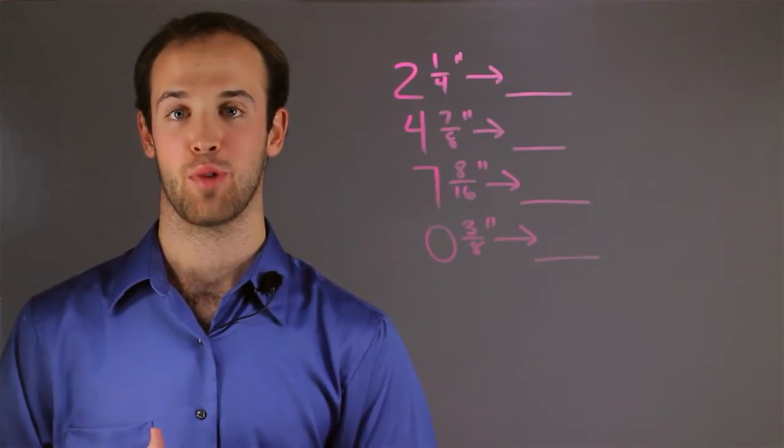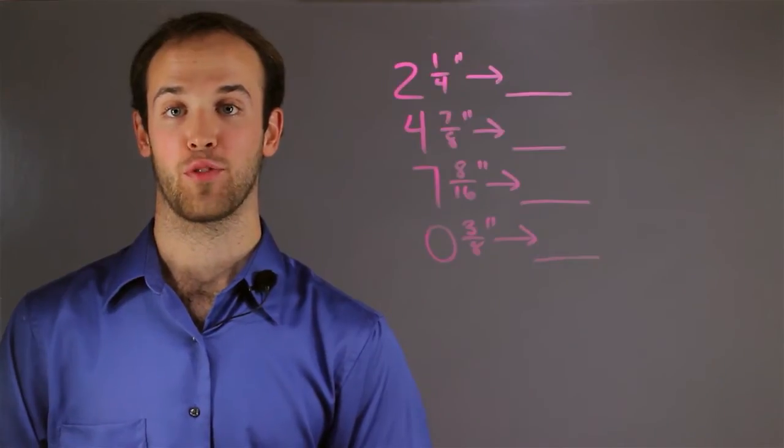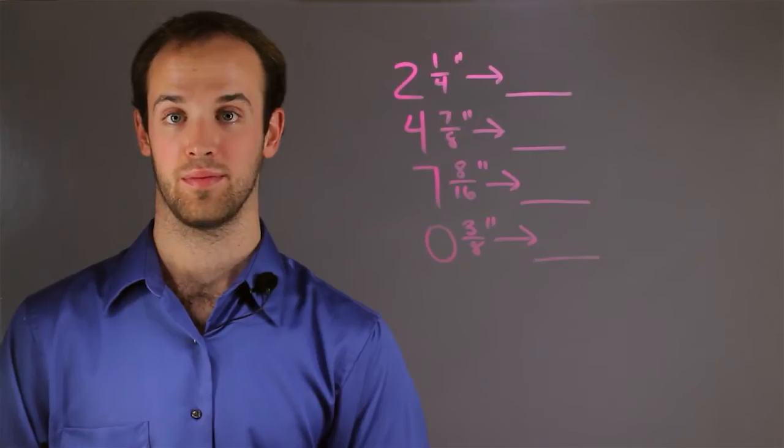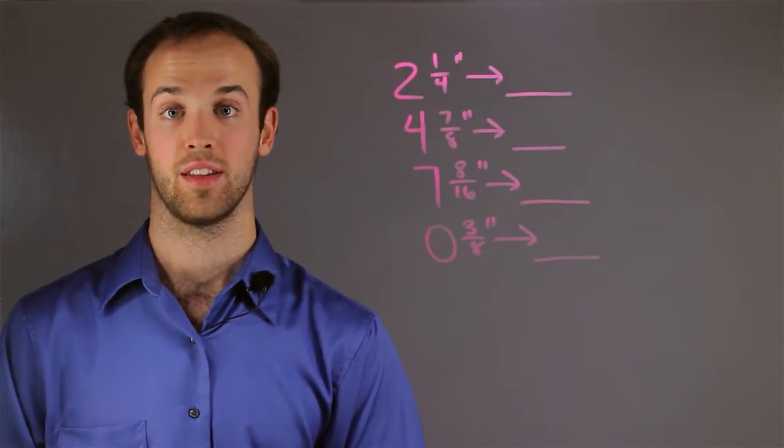Rounding to the nearest inch is the same as rounding to anything. You want to look at the fractional part. If the fractional part is less than one half, then the unit rounds down. If the fractional part is one half or greater, then the unit rounds up.